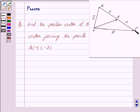Let P and Q be the two points represented by the position vectors OP and OQ respectively with respect to the origin O, and let R be the point which divides PQ internally in the ratio M is to N.